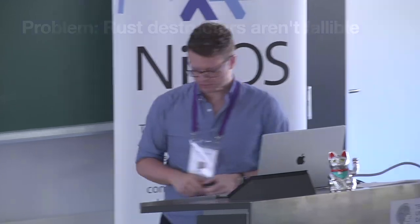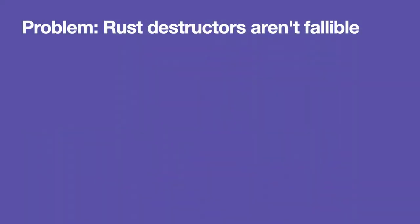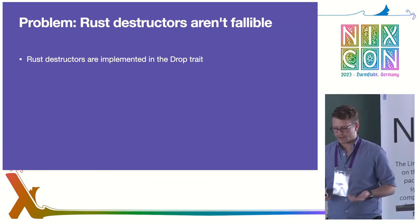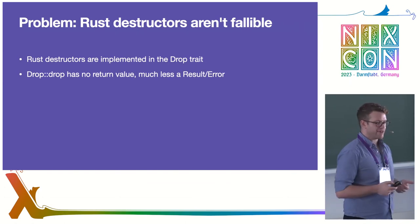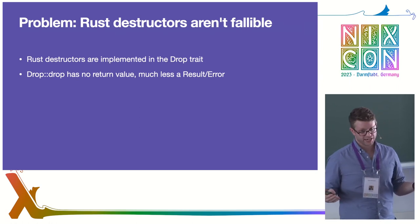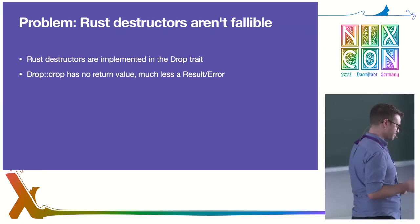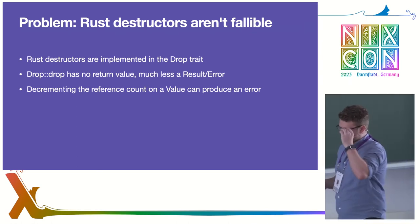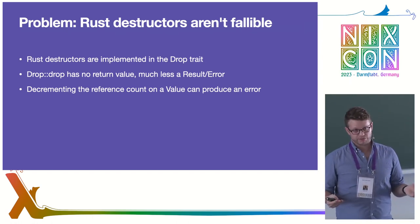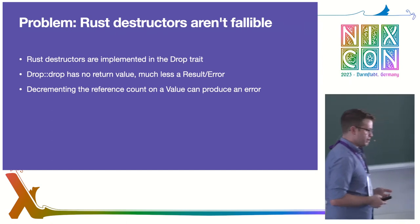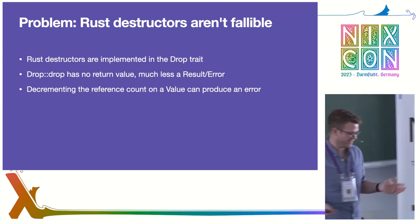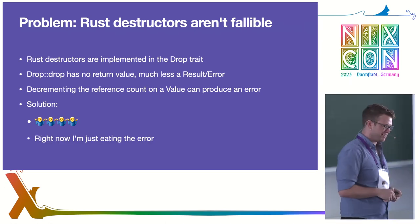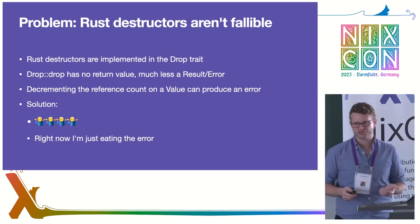Some problems with this approach. One big one is that Rust destructors aren't fallible. Rust destructors are implemented in the drop trait, and the drop method has no return value — it can't tell you there was an error other than crashing. When you create one of these Nix values, it's reference-counted under the hood. When you destroy it, you need to decrement that reference count, and with the current version of the C API, that can fail for some reason. What am I doing to solve that? Nothing — right now I'm just eating the error. That would need a more robust solution before real people could use it.